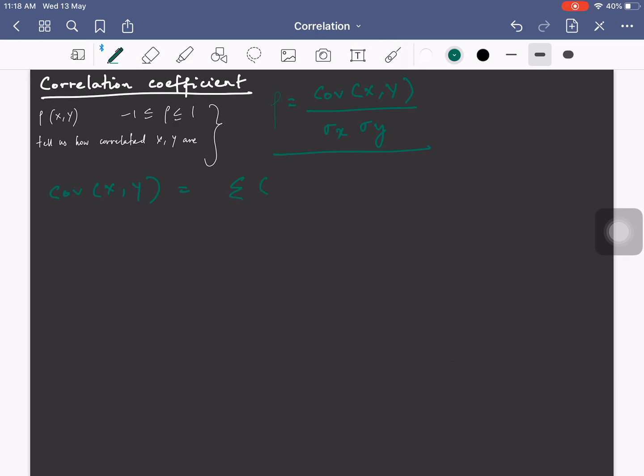sigma x i minus x bar times y i minus y bar by n minus 1. What we have here is a sample covariance.